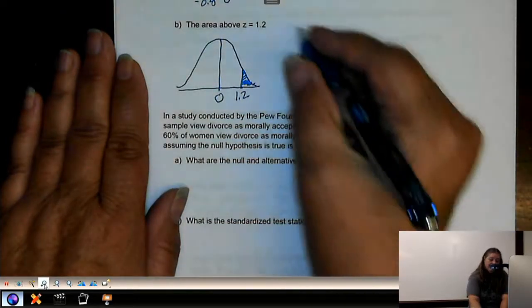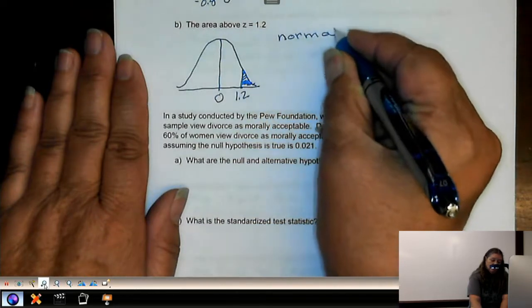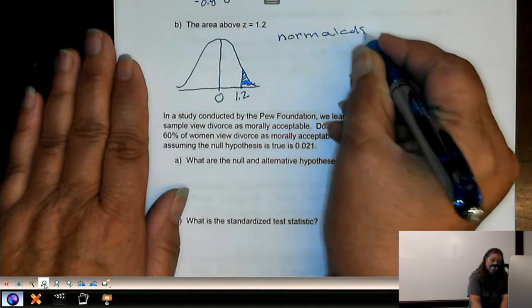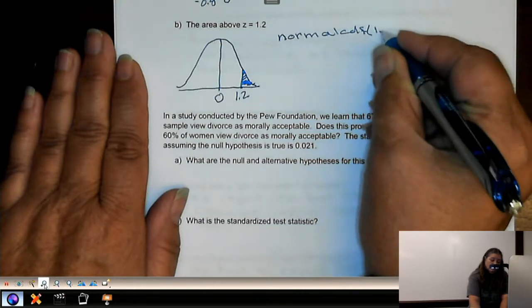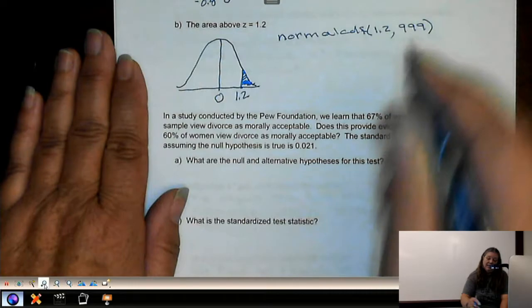Same steps. And we'll basically end up with normal CDF. Now, we have a lower limit of 1.2. We do not have an upper limit. So we just put in 999.